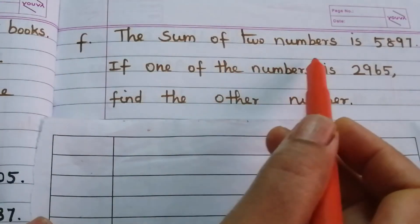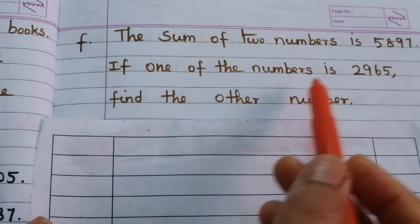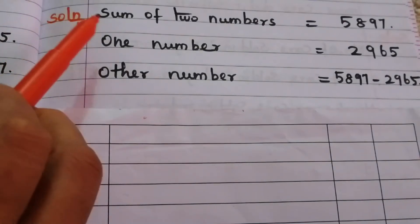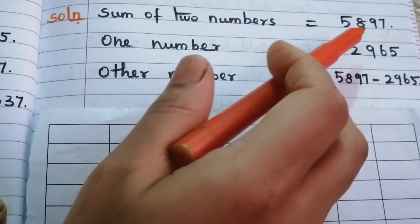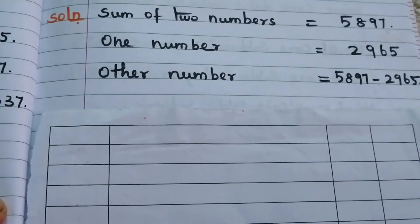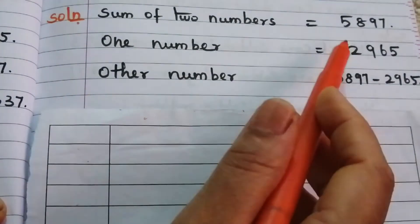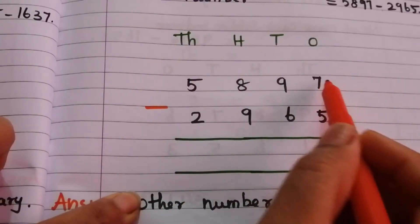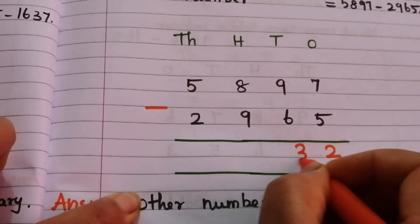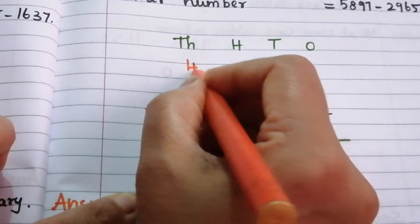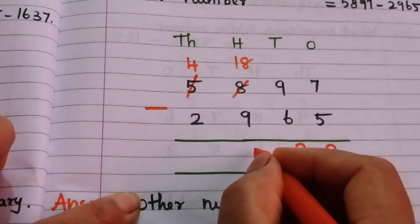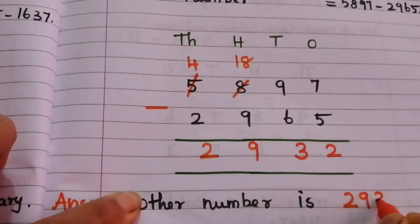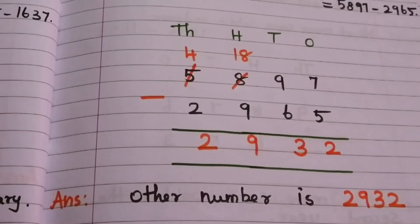F: The sum of two numbers is 5,897. If one of the numbers is 2,965, find the other number. Write down: sum = 5,897, one number = 2,965. Other number = 5,897 minus 2,965. 7 minus 5 = 2, 9 minus 6 = 3. Cannot subtract 9 from 8, so borrow — 18 minus 9 = 9. 4 minus 2 = 2. The answer is 2,932. The other number is 2,932.